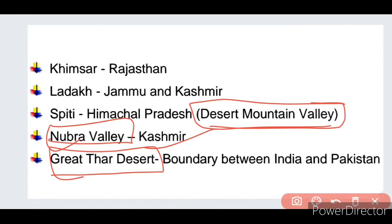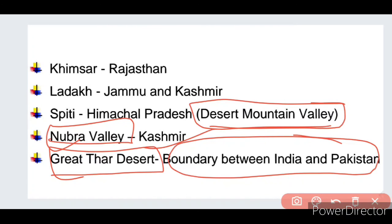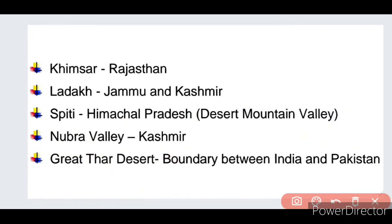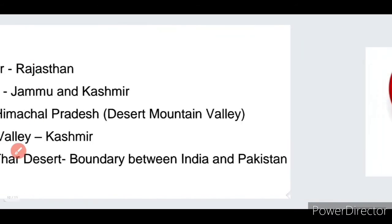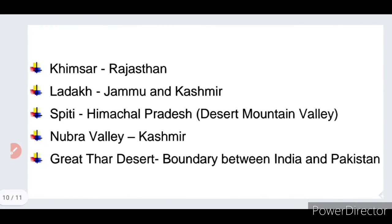The Thar Desert is in Rajasthan. It is the biggest desert in India, and it is located on the boundary between India and Pakistan. It is the most important desert in India. Thanks for watching this video — bye bye and have a nice day!